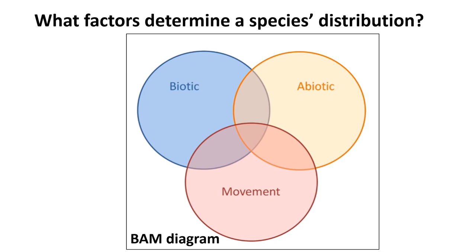Biotic is the area where the species has interactions and performs its functions — interaction with other species, for example. For abiotic, this covers temperatures, precipitation, wind, and any other physiological factors. The third circle is movement, which is the dispersal capacity of organisms to reach and use suitable areas.